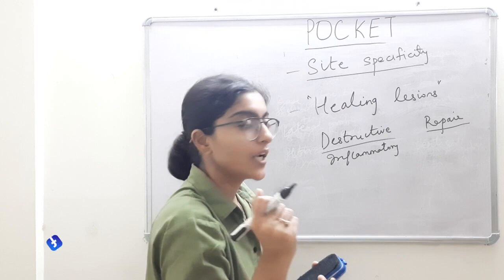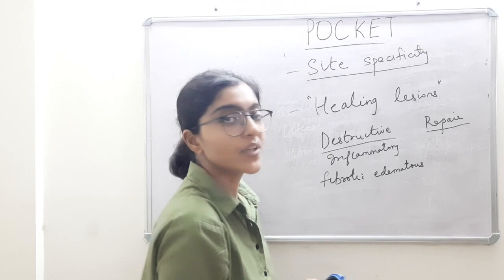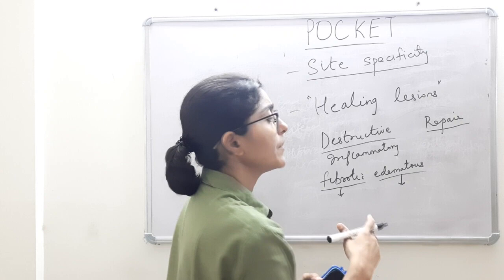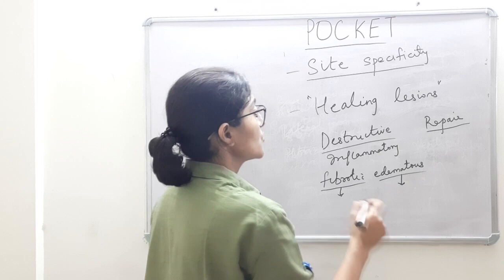In these destructive changes there are fibrotic changes and edematous changes. If fibrotic is overriding edematous, the tissues will be pink and firm. If edematous is overriding fibrotic, the tissues will be bluish-red, soft, and pitting on pressure. So this is the answer why periodontal pockets are called healing lesions and not healed lesions.